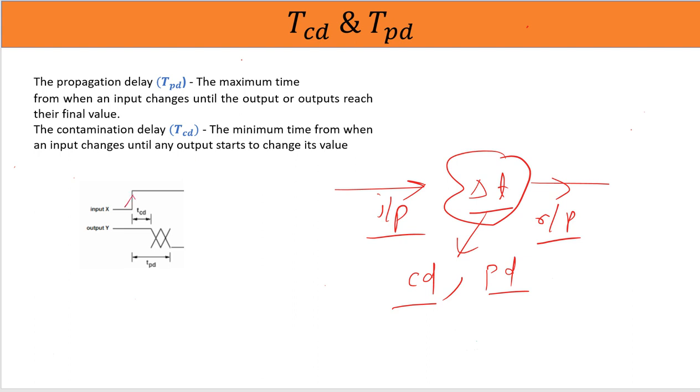Let's say you change the input from 0 to 1 for any combinational logic. Now contamination delay is the minimum time after which the output will be coming. So we are sure till the contamination delay, or till the Tcd, there will be no change in the output. Output will be in the initial state. After contamination delay amount of time, output will start changing.